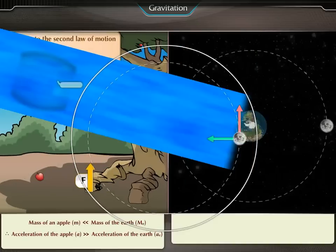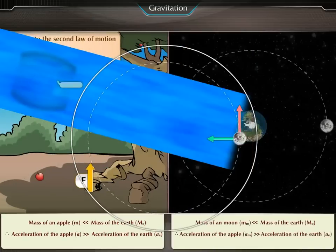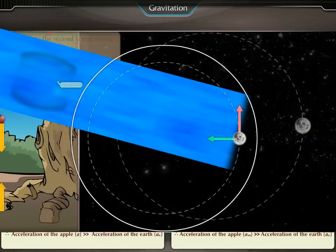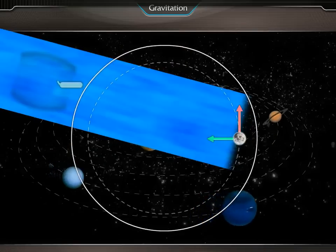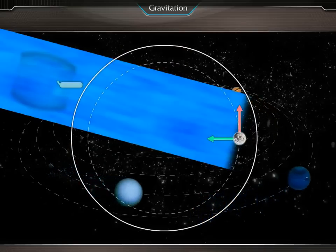In the same way, earth does not move towards the moon. In our solar system, all the planets go around the sun.